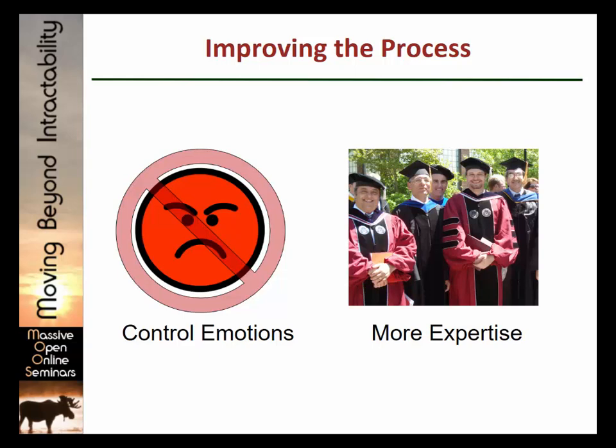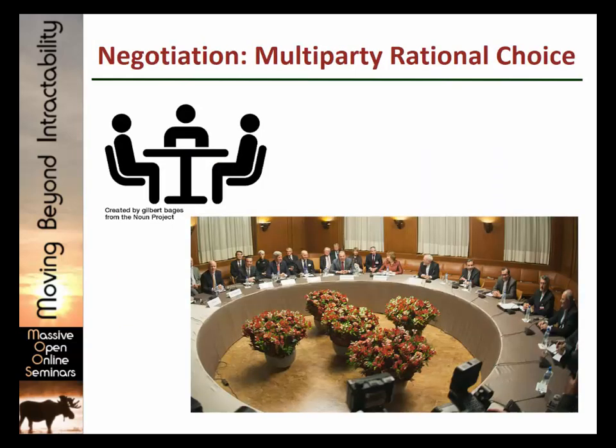So study, get advanced degrees, get consultants, get them to assemble a better list of options and a better set of assessments of the costs and benefits of each option. Now, all of this gets scaled up in negotiation processes, which are really a multi-party rational choice model. You might have a mediator. Two parties sit down at a table. They identify their interests, goals, options for achieving them. And then you try to come up with some solution that is as mutually beneficial as possible.